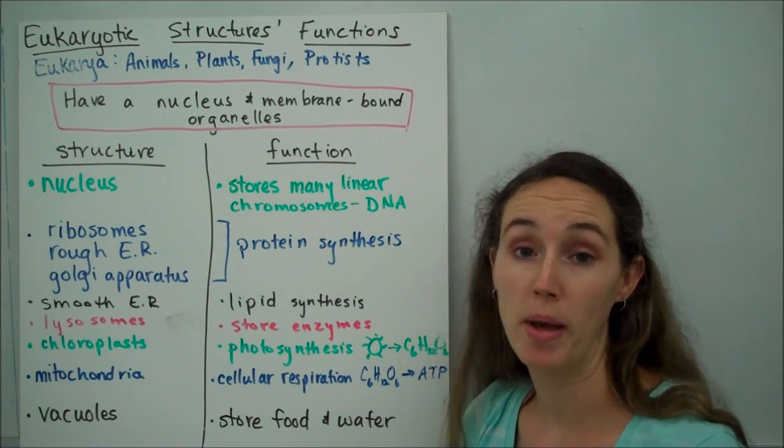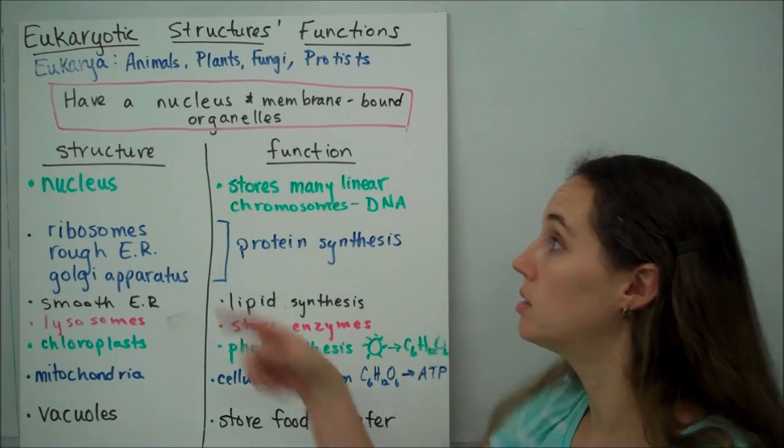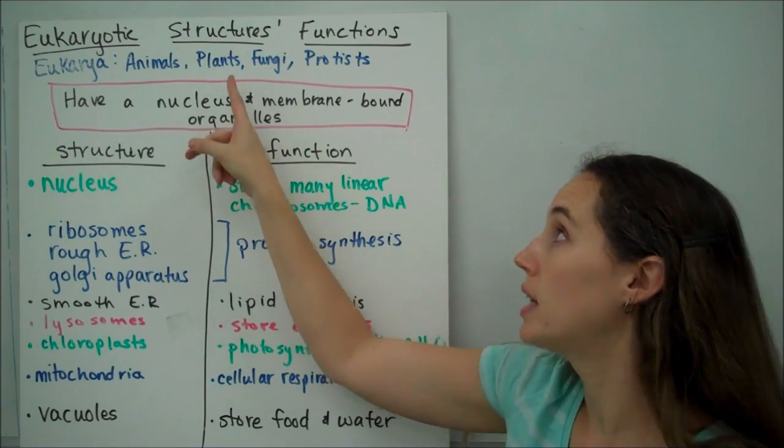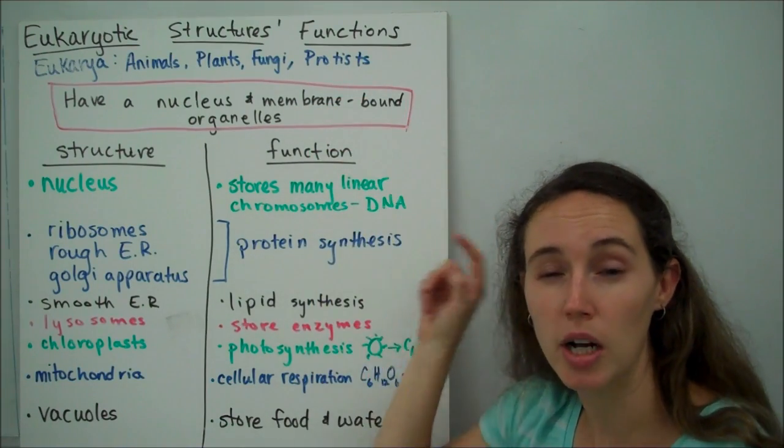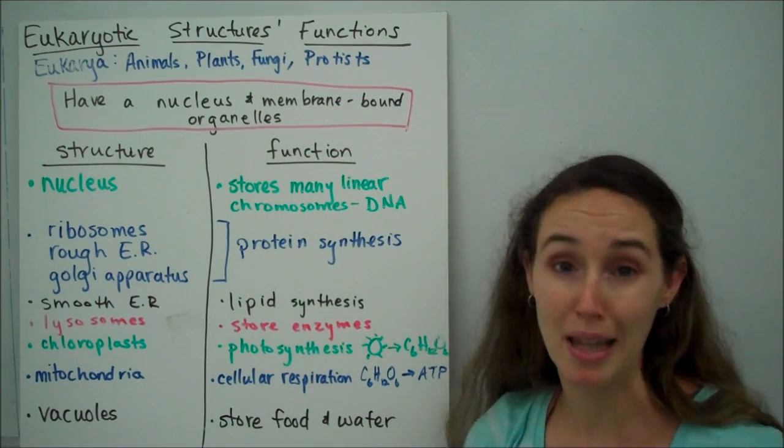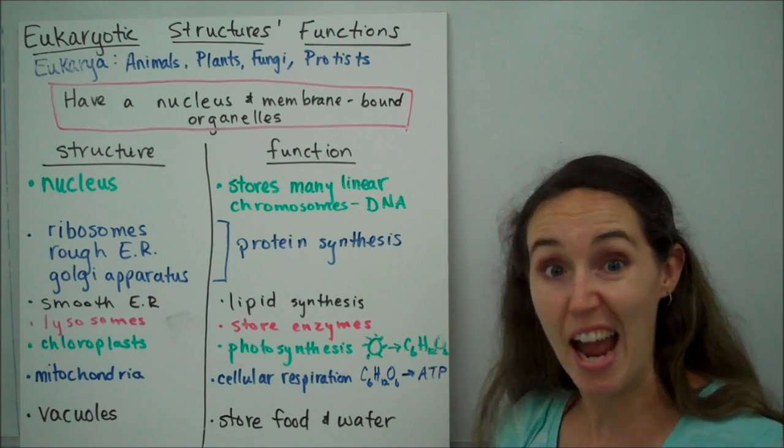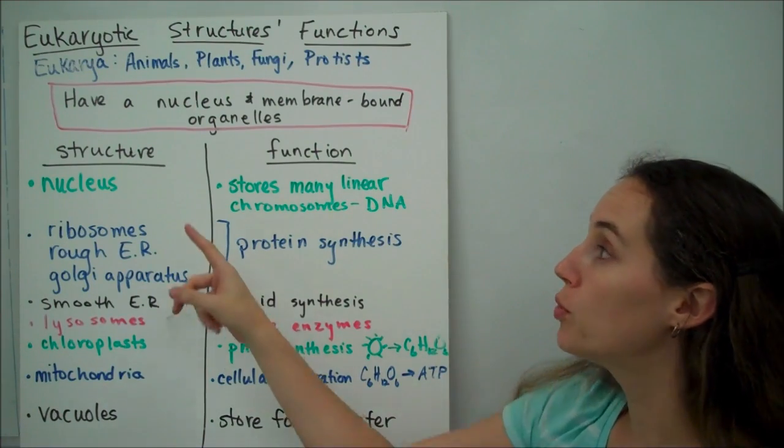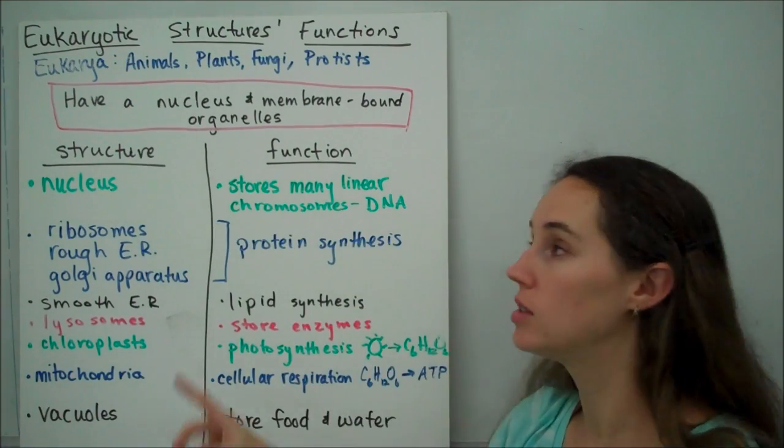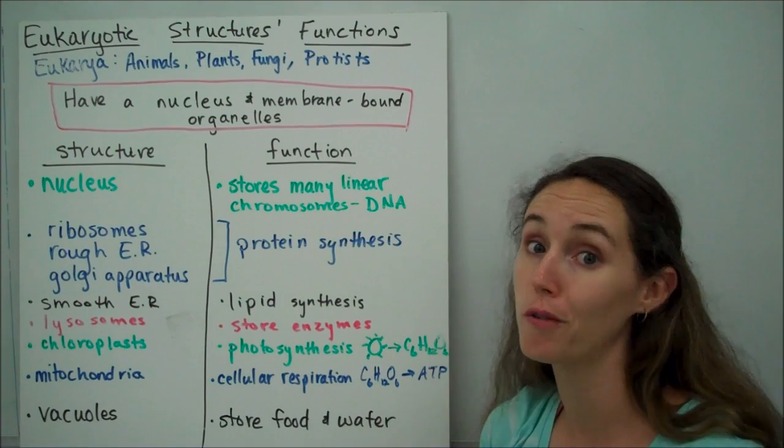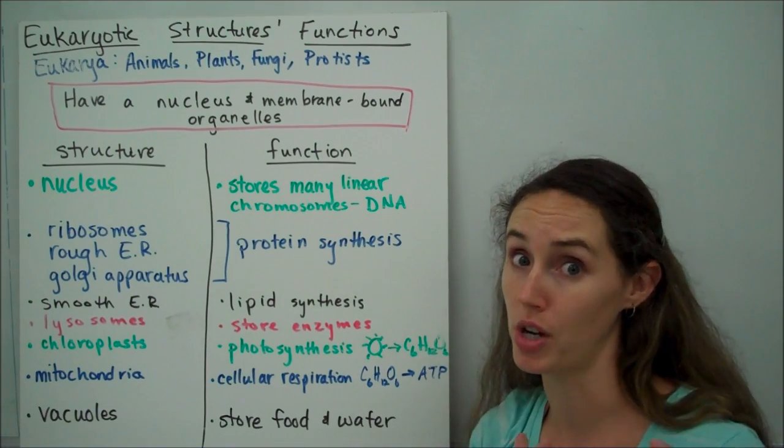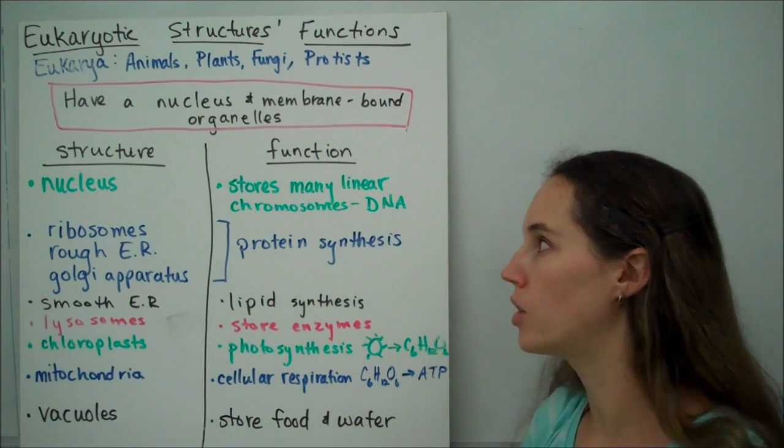Organisms in the domain eukaryote can be found in the kingdoms Animalia, Plante, Fungi, and Protista. So, these are the kind of things that go on on you and me and plants and mushrooms and algae, things like that. So, don't forget what makes eukaryotes special is that they have a nucleus and membrane-bound organelles. So, those are the ones we're going to focus on, not really the ones that we share with prokaryotes.